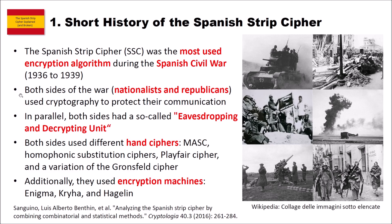Both sides of the Spanish Civil War — the Nationalists and the Republicans — used cryptography to protect their communication. In parallel to the usage of cryptography, they also did some cryptanalysis, and both sides had a so-called eavesdropping and decrypting unit. Both sides used different hand ciphers, for instance the monoalphabetic substitution cipher, which we already had a video about on this channel.